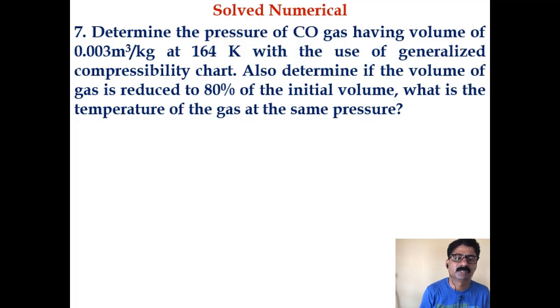Let us solve this problem. Determine the pressure of CO gas having a volume of 0.003 cubic meters per kg at 164 Kelvin with the use of generalized compressibility chart. Also determine the temperature of the gas at the same pressure if the volume of the gas is reduced to 80% of the initial volume.